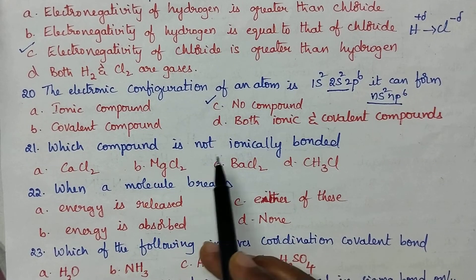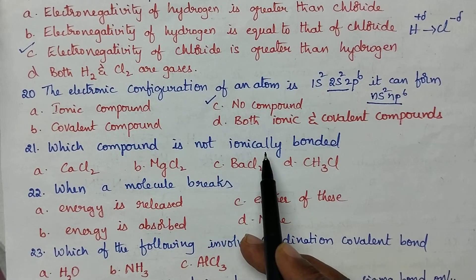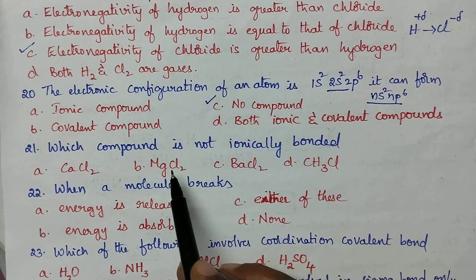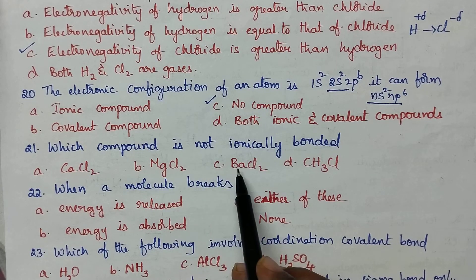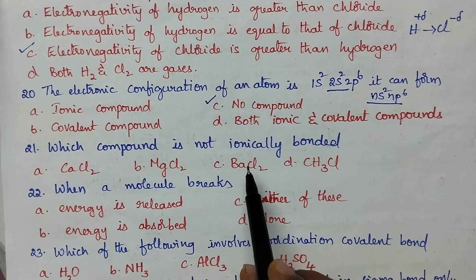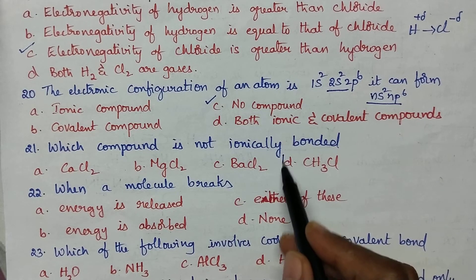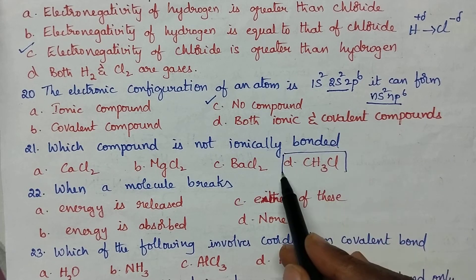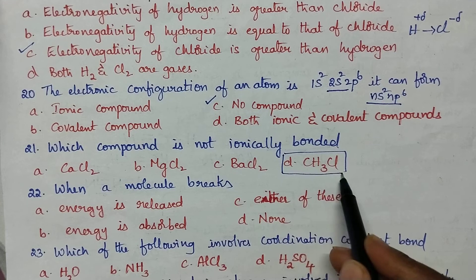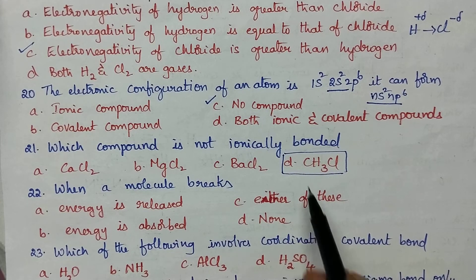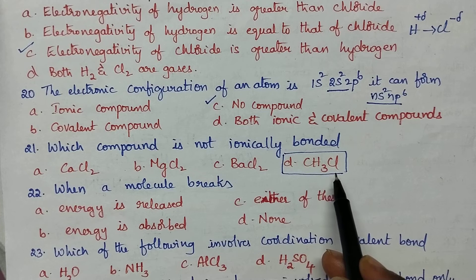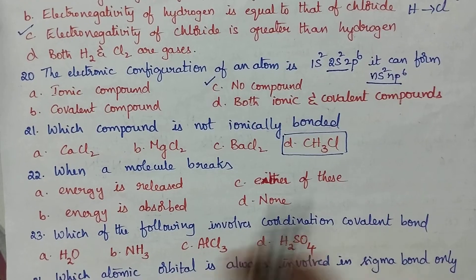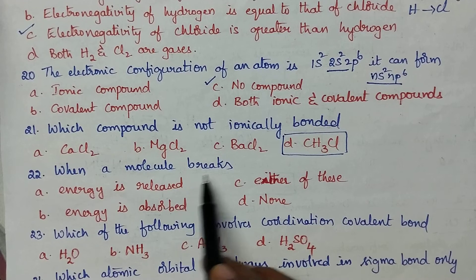Which compound is not ionically bonded? We have to identify which of the following compounds is not ionic. Generally, organic compounds involve the formation of covalent bonds. So option D — methyl chloride — is not an ionic compound.